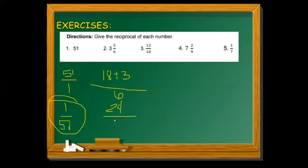24 over 6. Since it's a mixed number, we can change it. Let's multiply. The reciprocal of 24 and 6 is 6 and 24.